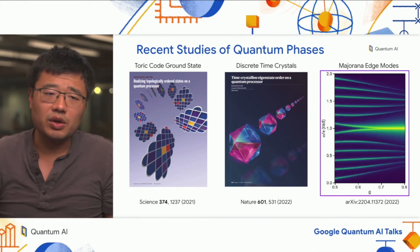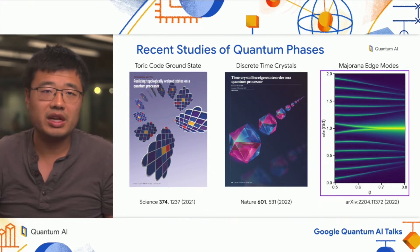Toward this direction, there are maybe three works over the last year or two that our group has published. One is where we realized the ground state of toric code. In the middle, we studied a form of dynamical many-body localization or discrete time crystals. On the very right, which is the subject of today's talk, is the study of Majorana edge modes. These all represent different phases of matter.